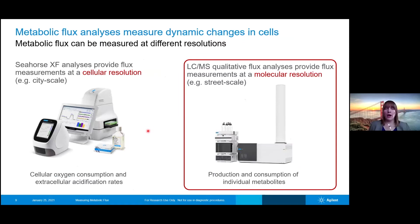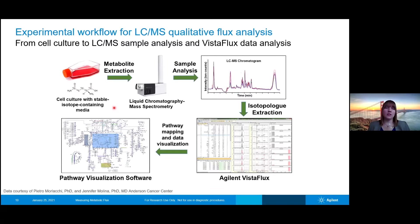So that's a little bit of background on the seahorse assays. Next, I wanted to give some background into the LC-MS qualitative flux analysis. In this type of analysis, what we're doing is using isotope-labeled metabolites to understand what are the rates of interconversion of metabolites. We can add these isotopically labeled metabolites to cell culture, let them be metabolized by the cells, and then use LC-MS technology to both separate those metabolites out in liquid chromatography and measure the mass of those metabolites using mass spectrometry. This helps us isolate the different isotopes and see where these isotopes went once they were introduced to the cells.